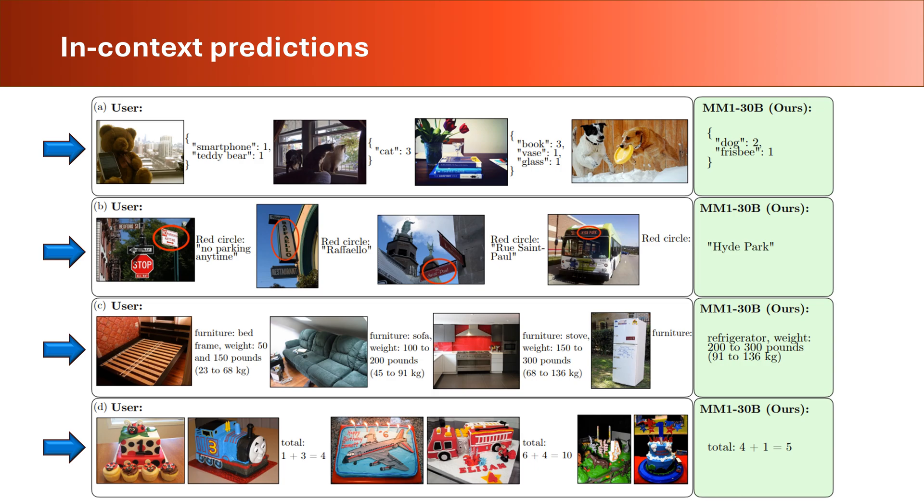In the third row, user presents an image including an object to the MM1 model. The model detects the type of object and provides an estimation of its weight. This is very amazing how this model can estimate the weight of an object just by seeing its image. In the fourth row, the user has asked the model to read the numbers in the two images and return their sum. Let's slow down for a moment.